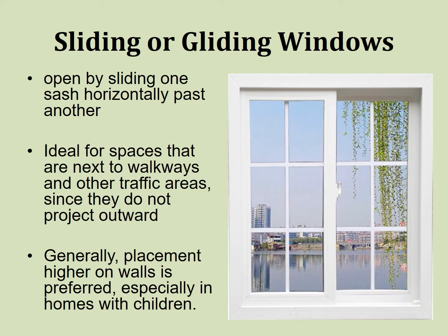Next we have sliding or gliding windows. These open by sliding one sash horizontally past the other — you slide the window left or right. This is ideal for spaces next to walkways and other traffic areas since they do not project outward. If you have a window that swings open and someone's walking by, you might clothesline somebody. Placement higher on the walls is preferred, especially in homes with children, because you don't want children reaching up and trying to move that window.